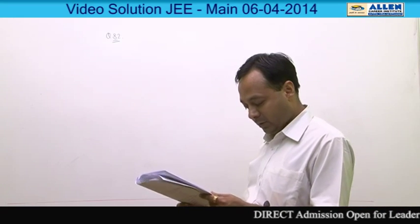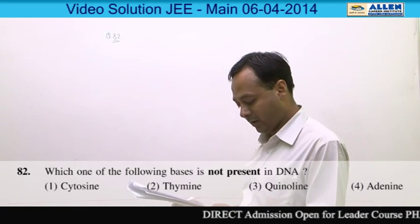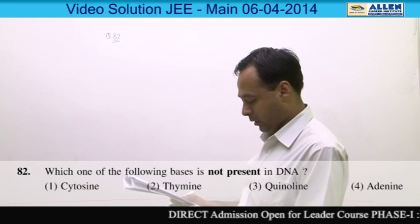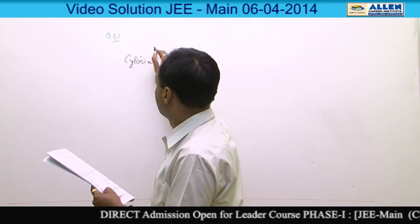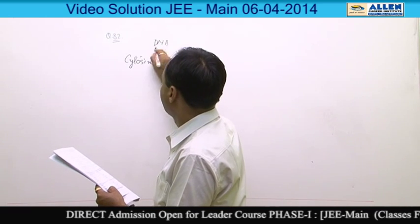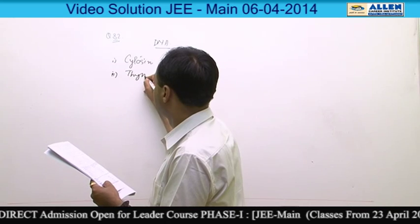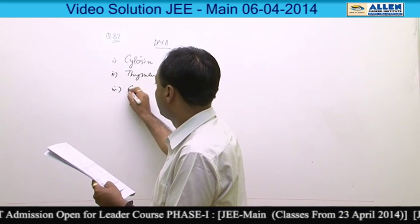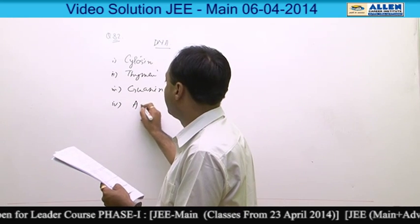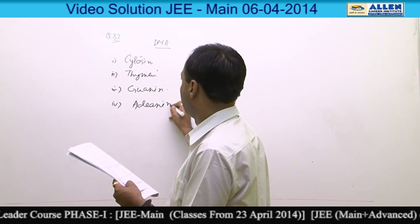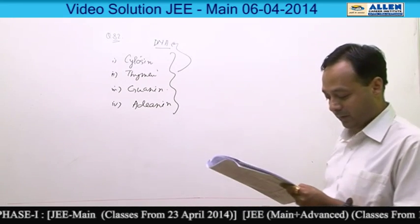Question number 82: which one of the following bases is not present in DNA? DNA actually consists of four bases: cytosine, thymine, guanine, and adenine. These four are the bases that are part of DNA.